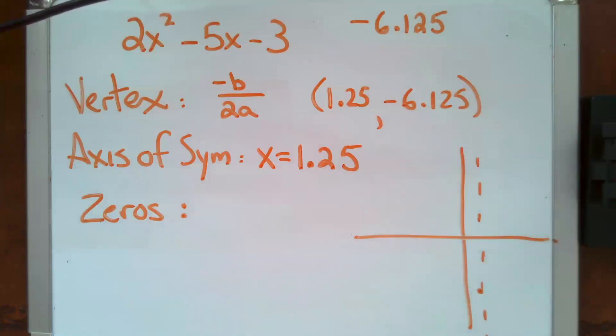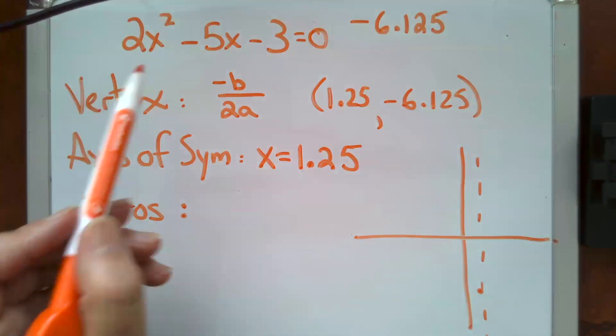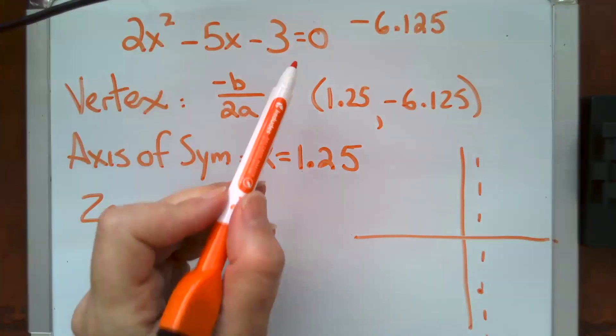Okay, so our final step here is to find the zeros. Well, the zeros of an equation are always what x makes this equation equal 0. And visually, that's where does it pass through the x axis, right? At what point does it make your y equal 0? And the way to find that is factoring.